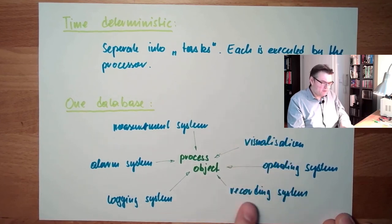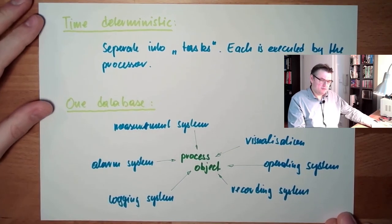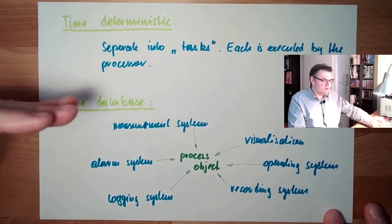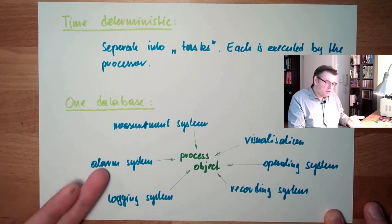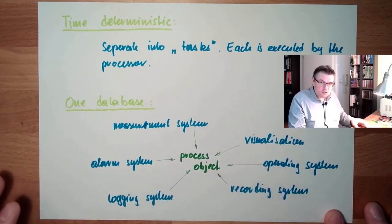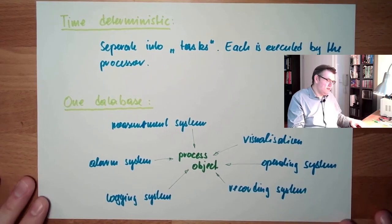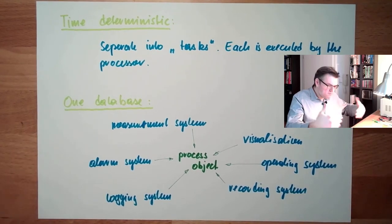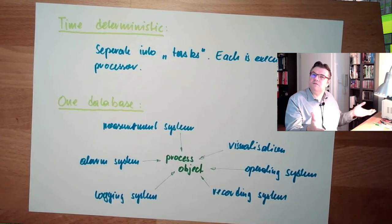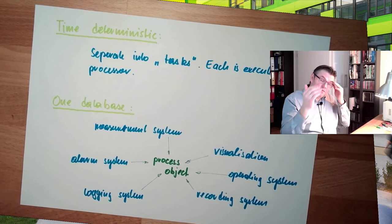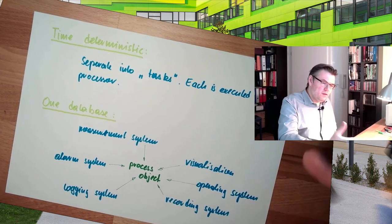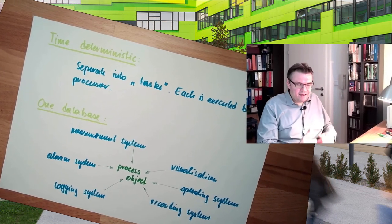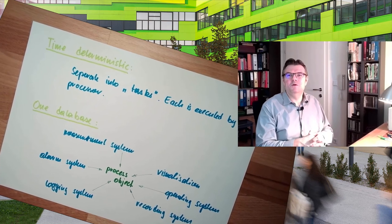Every task running there is time deterministic. These are the two things. Imagine the visualization shows a different object than the alarm system — then you get an alarm from an object you cannot see. That simply cannot be allowed. These are two things a process control system simply needs to fulfill.